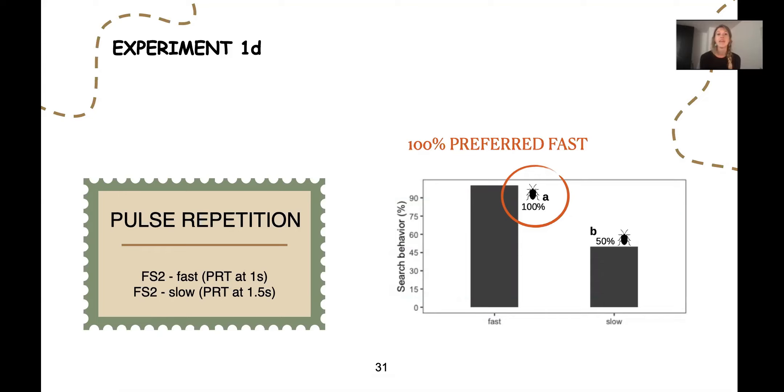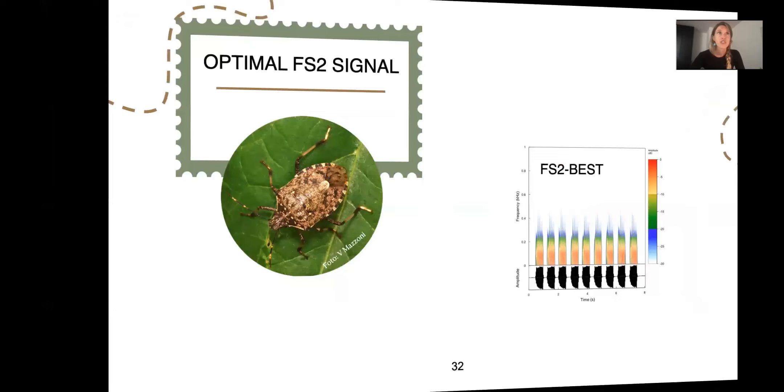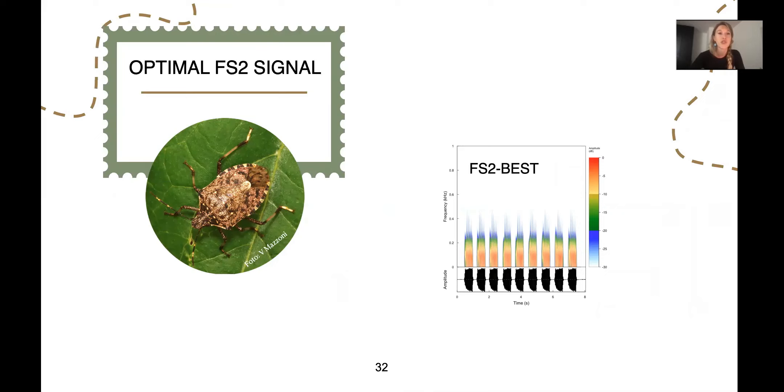For this part, we found that 100% of the individuals preferred the fast pulse repetition. In fact, in insects, the signal emission rate can be associated to different physiological parameters such as age, size, and nutritional condition. Therefore, it could be an important element to evaluate fitness. In this sense, we ended up keeping the fast pulse repetition. So for this part, we arrived at the optimal FS2 female signal, which was fast repetition, continuous, 76 hertz playback.